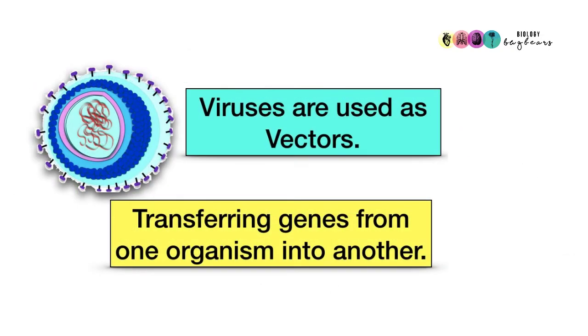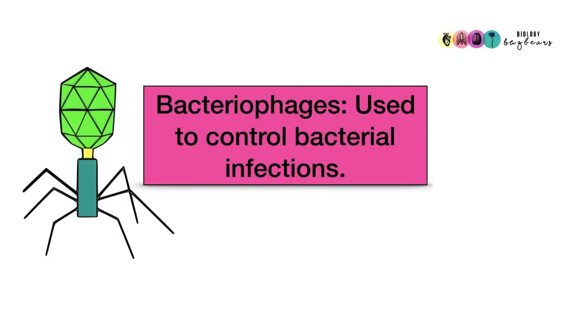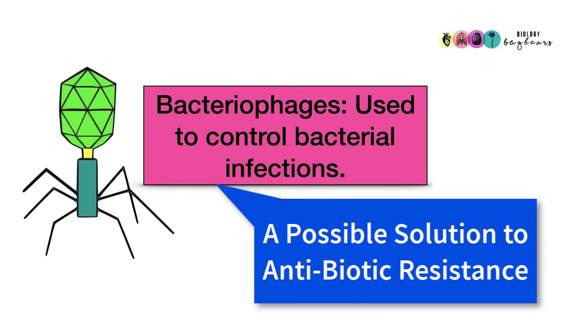Viruses do have some very important advantages. They're used as vectors for transferring genes from one organism into another, and this is very important for genetic engineering and for the future of medicine. Another great advantage is the bacteriophage—that virus that can infect bacteria. It's possibly a way of controlling bacterial numbers but also a possible solution to antibiotic resistance, which is a huge problem at the moment.